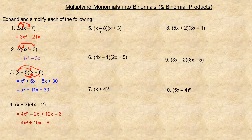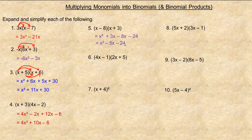Number five: (x minus 8)(x plus 3). x times x is x squared, x times three is 3x, negative eight times x is minus 8x, and negative eight times three is minus 24. Combining like terms in the middle: 3x minus 8x is minus 5x. So the final answer is x squared minus 5x minus 24.